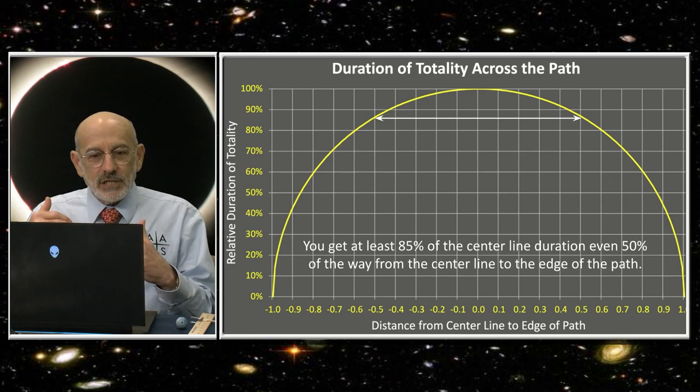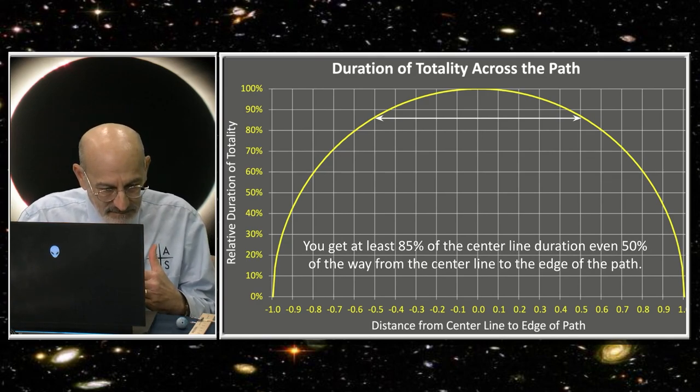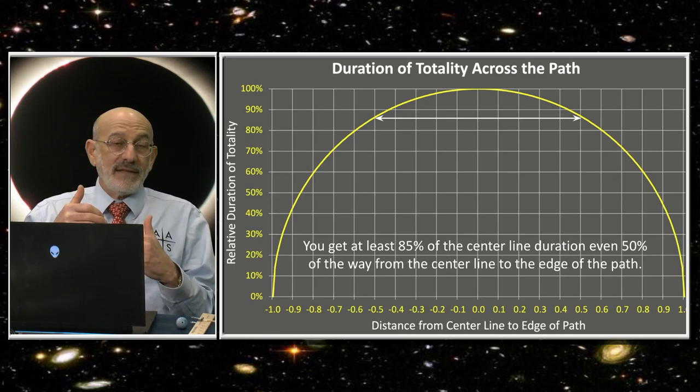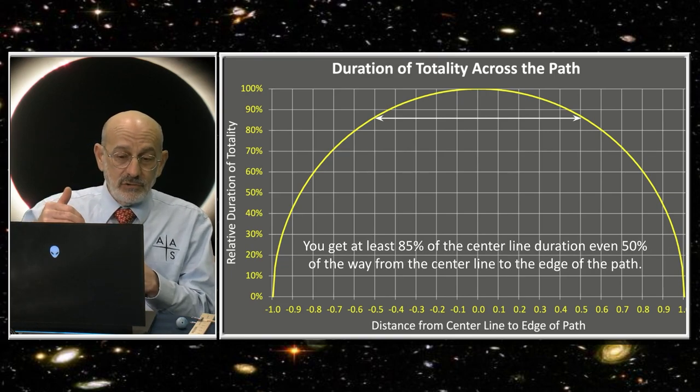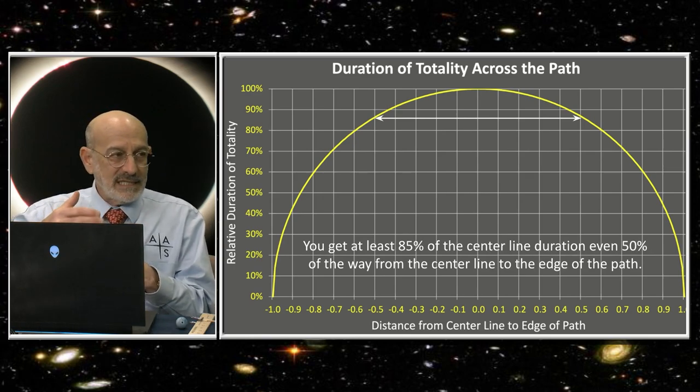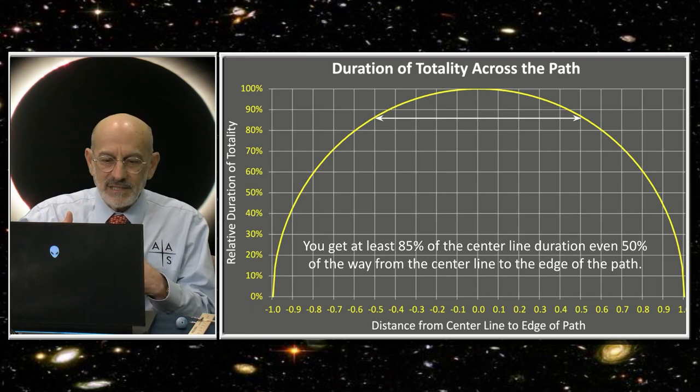There has been a misunderstanding that the closer you get to the path, the longer totality lasts. That's not quite right. There is no totality unless you're in the path. What's true is that the closer you are to the center of the path, the longer totality will last. But you don't have to be in the center of the path.